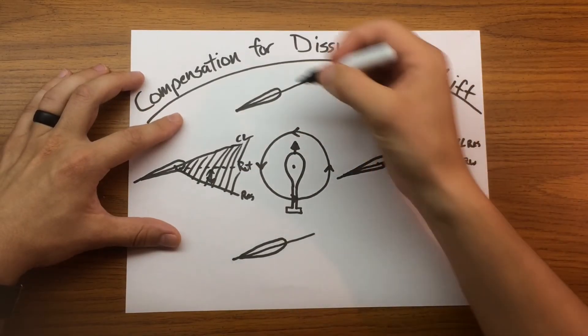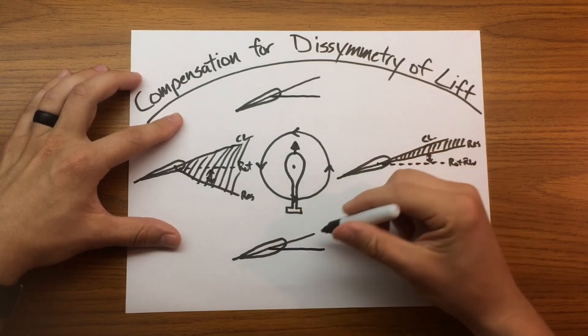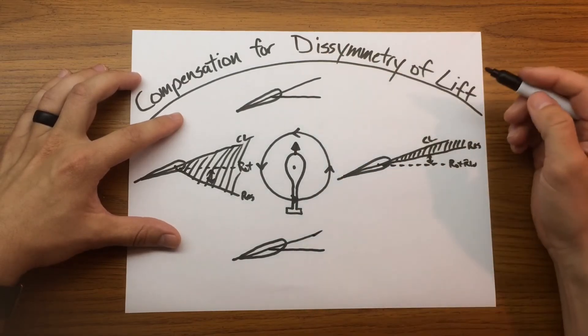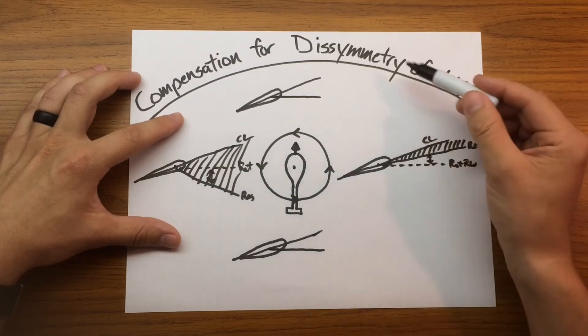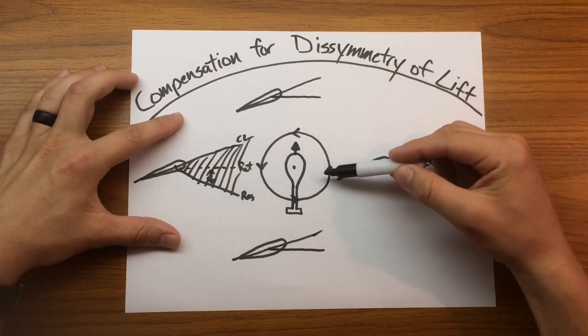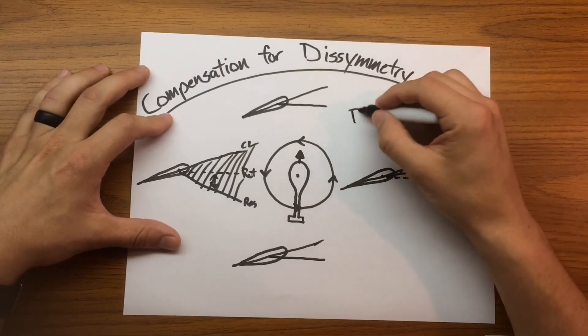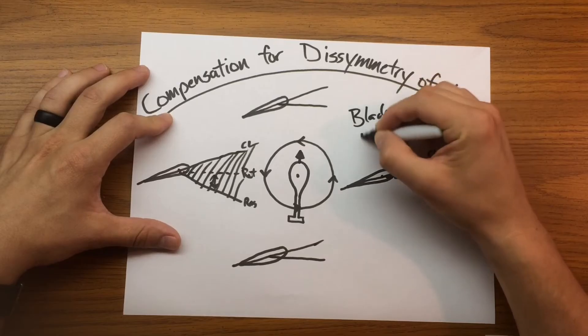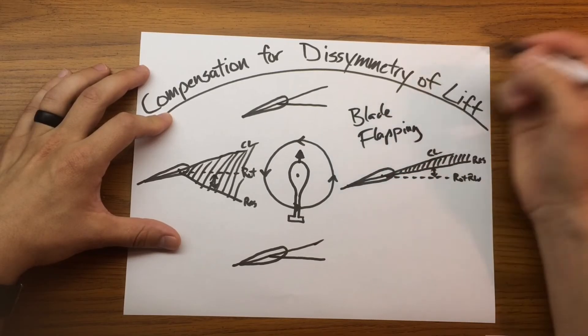So if you look at the nose and the tail, this is going to be relatively the same on both the forward and aft portions of the blade. But now we have a clear difference in lift. We're compensating for that dissymmetry of lift by just having the blades flapping up and flapping down. And that wraps up blade flapping as a means to compensate for dissymmetry of lift.